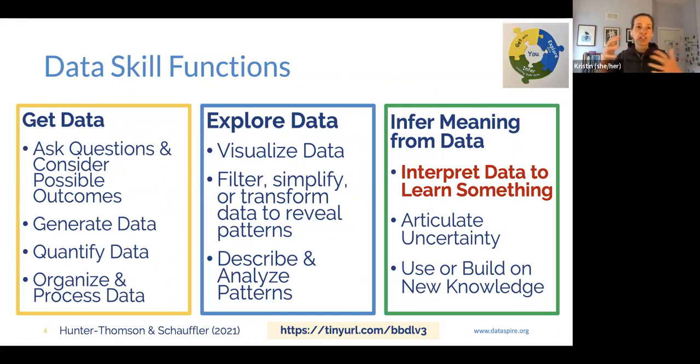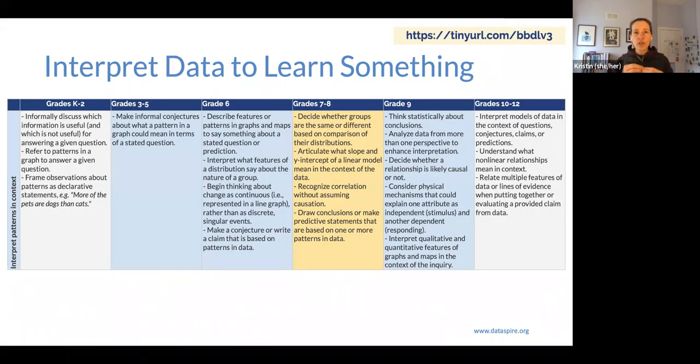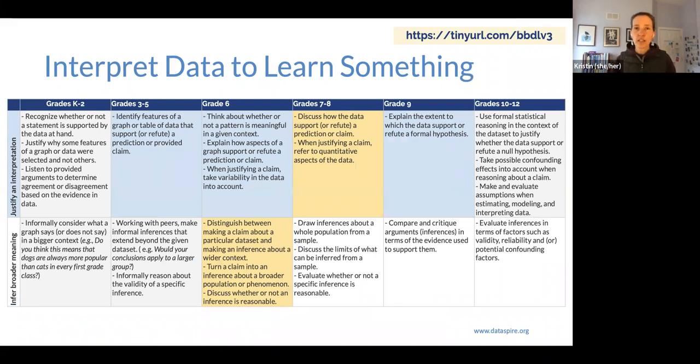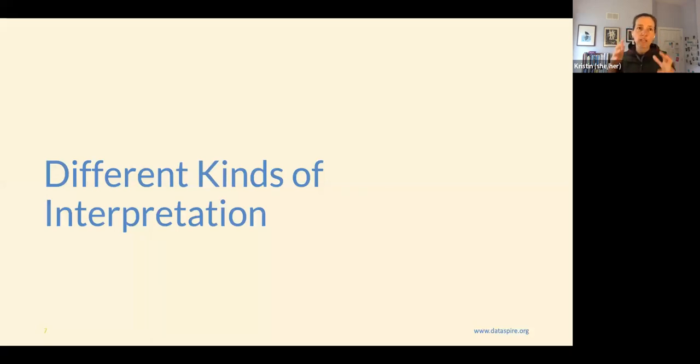So the interpret patterns in context is part of our interpret data to learn something in terms of the three different functions, the realms that we work with when we're working with data. And we've broken that down even more to be like, okay, but what does that actually mean? What are the different components of interpreting data to learn something? And this, this is work by my colleague Molly Schauffler and I, you can find it here at this tiny URL where we break down the three main components where we're interpreting patterns in context, justifying an interpretation, and inferring broader meaning.